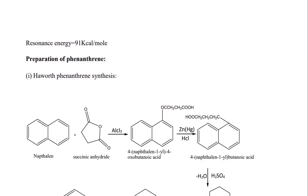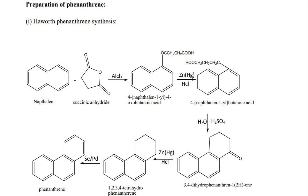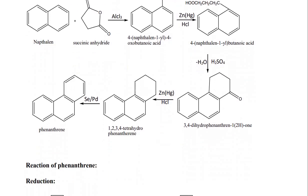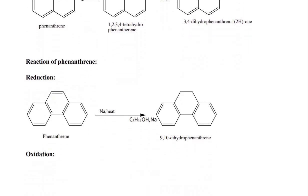Preparation of phenanthrene: starting from naphthalene and succinic acid, 4-(naphthalen-1-yl)-4-oxobutanoic acid is formed. This gives 4-(naphthalen-1-yl)butanoic acid, then 3,4-dihydrophenanthren-2(1H)-one. Reduction with amalgamated zinc and HCl gives 1,2,3,4-tetrahydrophenanthrene. In the presence of palladium or selenium, phenanthrene is obtained.